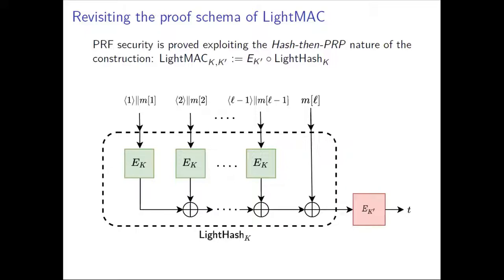If we look at the construction of LightMAC, we can see a hash part and a PRP part — we name it LightHash. This LightHash is only dependent on key K, so this construction can be seen as a hash-then-PRP construction. If we write it in a functional expression, this is the functional expression of LightMAC depending on keys K and K'.